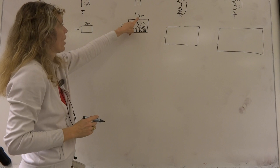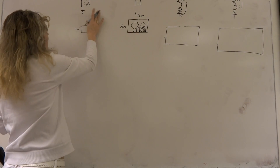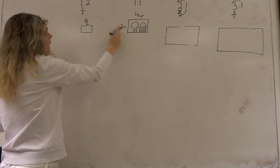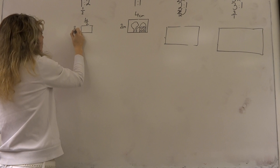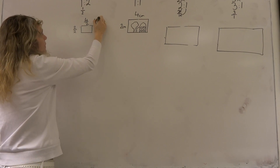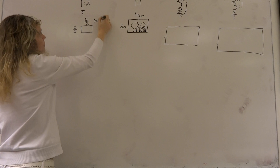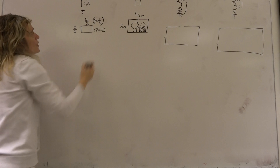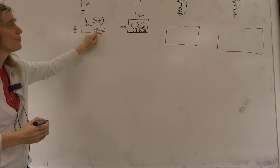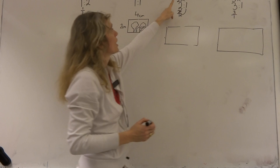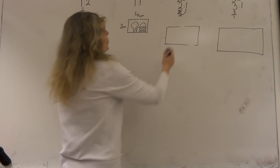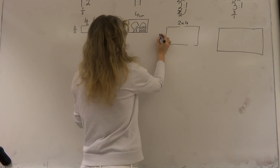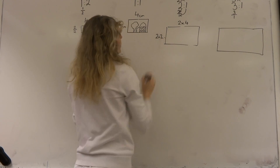What happens when we halve the length? We would get four centimetres divided by two, and here we would get two centimetres divided by two. So we're doing the same as four times a half, and on the breadth we are doing two times a half — so we're halving the length and we're halving the breadth. When we're doing two times larger, we're doubling the length, so two times four would be our length and two times two would be our breadth.